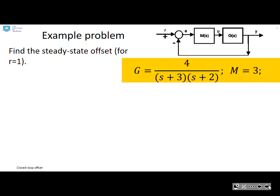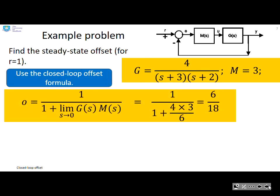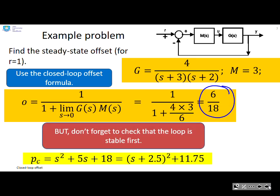Next problem then. So the difference here is simply that this is a quadratic. Again, you can see there's no integrator here. So when I use my standard offset formula, I'm not surprised that I get a finite number. There is an offset. Of course, once again, please check for stability. And again, you'll see that the two poles are in the left half plane.